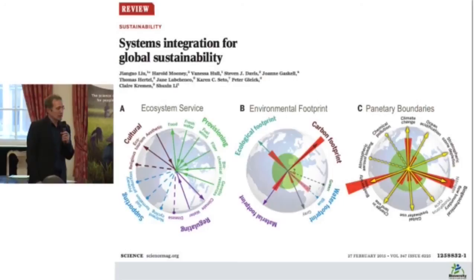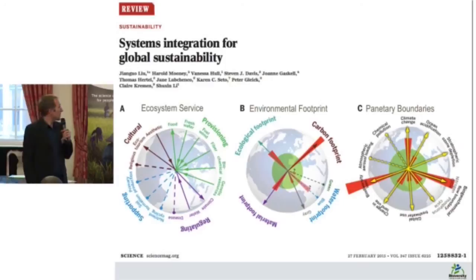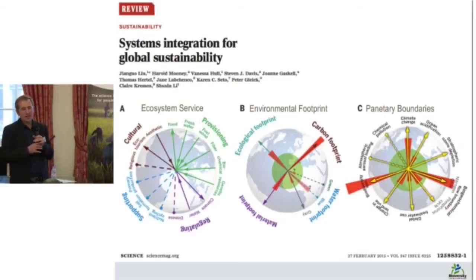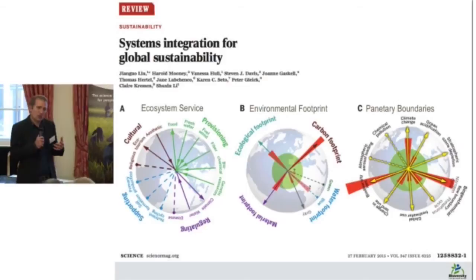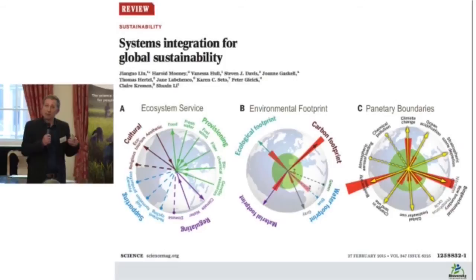Liu et al. propose three models for global sustainability: the ecosystem service model, the environmental footprint model, and the planetary boundaries model. For those working in agriculture, this reveals agriculture as a primary driver of surpassing planetary boundaries, increasing environmental footprints, and changing ecosystem services. This raises the question: if agriculture has such an important role in driving these boundaries, it probably is a very important solution space as well — how can we transform agriculture so these boundaries are reduced?